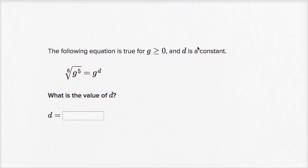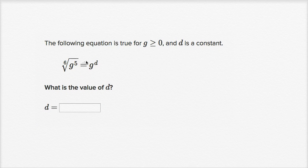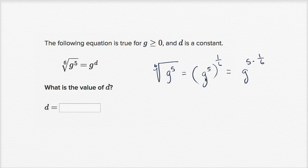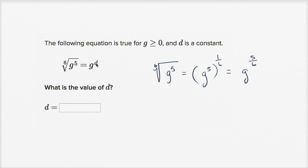Let's do a few more similar problems dealing with roots and fractional exponents. The following equation is true for g greater than or equal to zero, and d is a constant — what is the value of d? If I'm taking the sixth root of something, that's the same as raising it to the one-sixth power. So the sixth root of g to the fifth is the same as g to the fifth raised to the one-sixth power, which equals g to the five times one-sixth, or g to the five-sixths. So d is five-sixths.